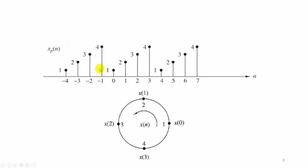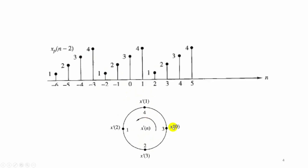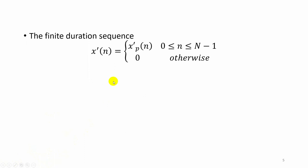Here the periodic sequence is given which is repeated. The same sequence is represented in a circular form, with values x of 0, x of 1, x of 2, and x of 3 represented in the anti-clockwise direction. Also, a periodic sequence shifted by 2 units compared with the previous figure is shown, where x of 0 and x of 1 values are shifted. The finite duration sequence is given by x dash of n, which equals the periodic sequence for the period 0 to N, and 0 for other durations.